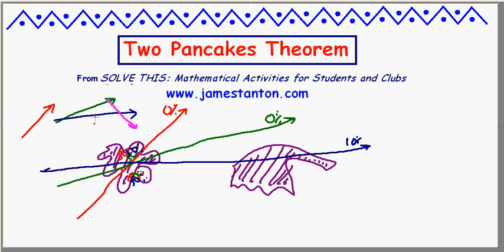Maybe in this direction. We'll go a little bit far. There certainly exists a line by the one-pancake theorem that chops the first pancake into 50% and 50%. But now I've gone too far. I've got 100% of the second pancake's area to the left of that line.